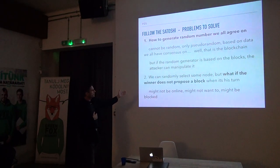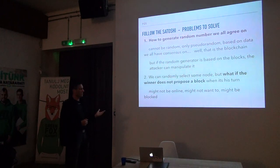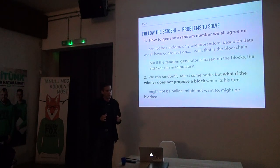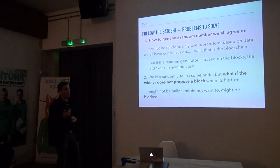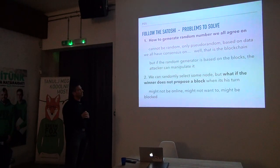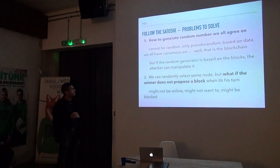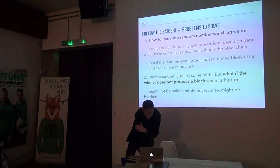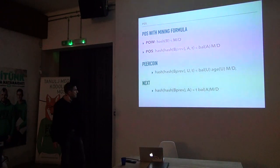Another problem: what if the winner we selected doesn't come up with a block? We pick a satoshi, and the person who owns it doesn't produce a block — that's another problem. Different coins try to solve these problems differently. Ouroboros is a very new and popular one that uses the satoshi-selection approach but invented a special peer-to-peer distributed coin-flip mechanism for random number generation. The first practical proof-of-stake system was actually Peercoin, followed by others.